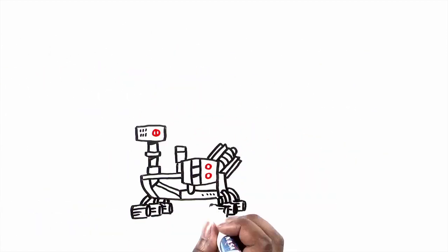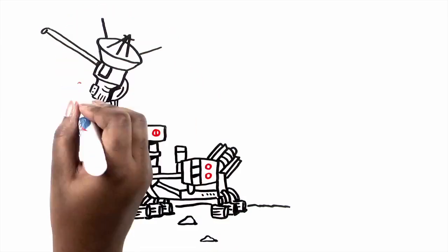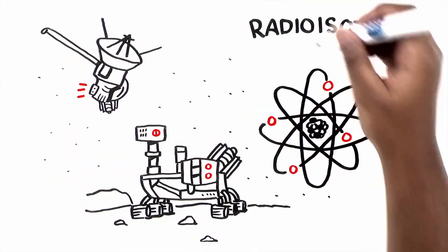That's why NASA's Curiosity rover on Mars and other NASA spacecraft that explore the solar system use something called radioisotope power.